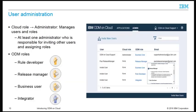In ODM on cloud, users are assigned roles that determine their access to the development, test, and production environments. At the cloud level, there is one role for administering the environments. The administrator manages the users and controls the role assignments, and each cloud instance needs at least one administrator. ODM on cloud provides a set of roles for users to collaborate as a team on modeling, authoring, governing, deploying, and integrating the decision services. The roles are Rule Developer, Release Manager, Business User, and Integrator.